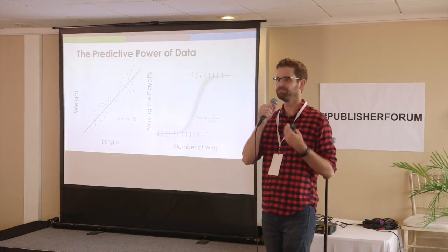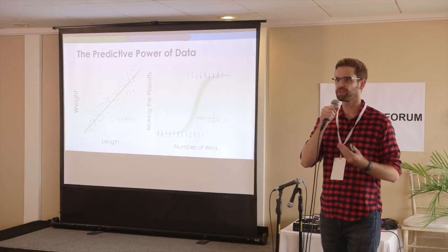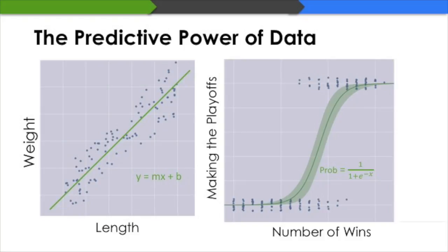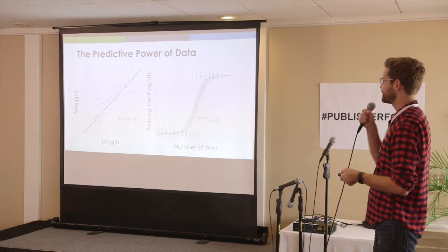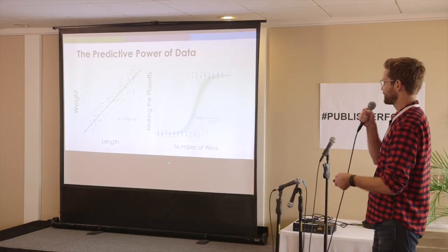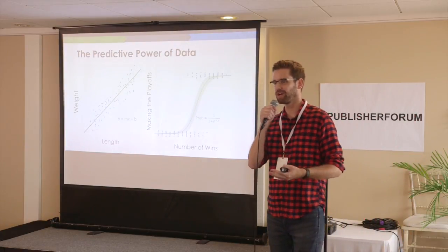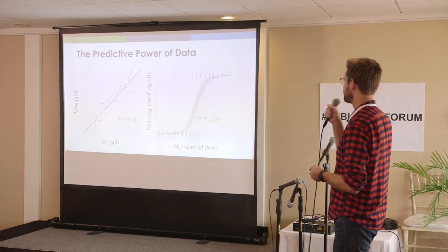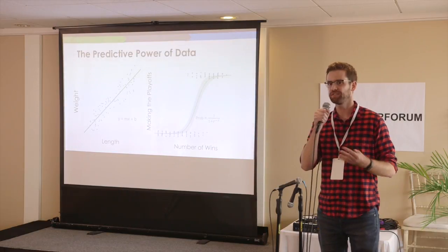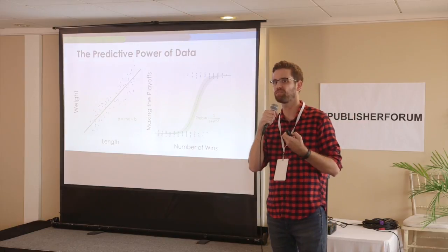What if you want to do something more complicated — something with a binary outcome, a yes or a no? I've made up some data about NFL football teams. On the x-axis we have the number of wins, and on the y-axis a yes or no for whether they made the playoffs. As teams win more games, fewer miss the playoffs, and there's a threshold with roughly a 50-50 probability of making the playoffs. We don't want to use y = mx + b because you'd get a negative chance of making the playoffs, which isn't true. Instead we use a logistic equation, which gives an outcome between 0 and 1. Plug in 9 wins and you get about a 50-50 shot — so we can use data science to predict probabilities of an event happening.